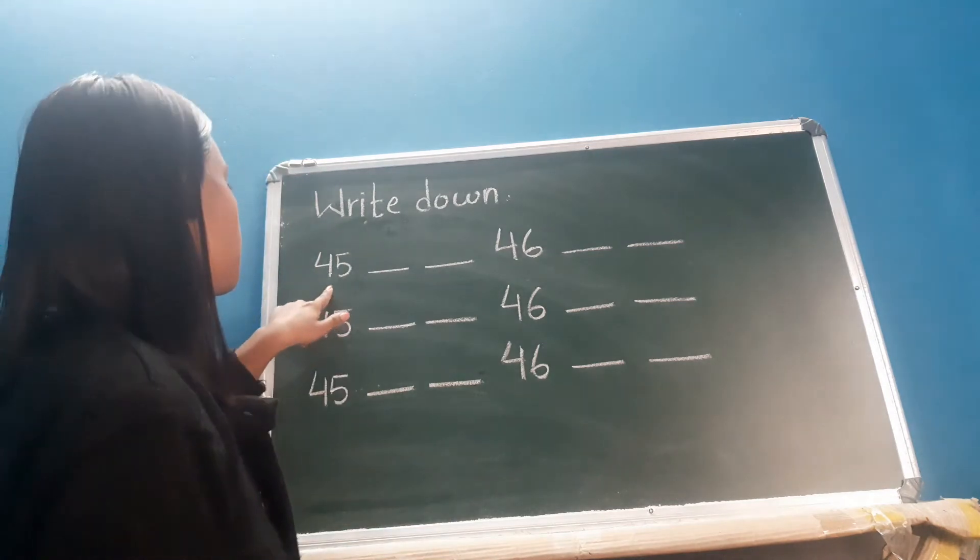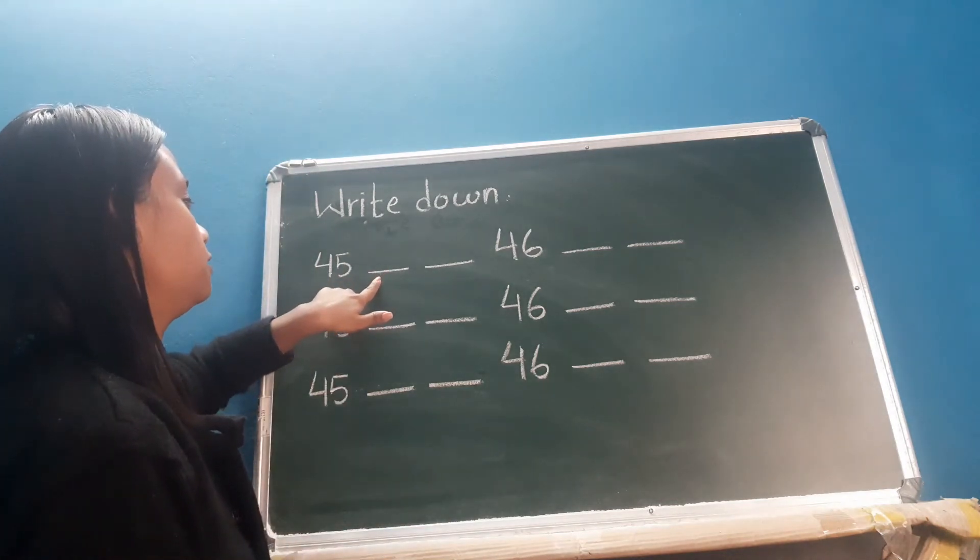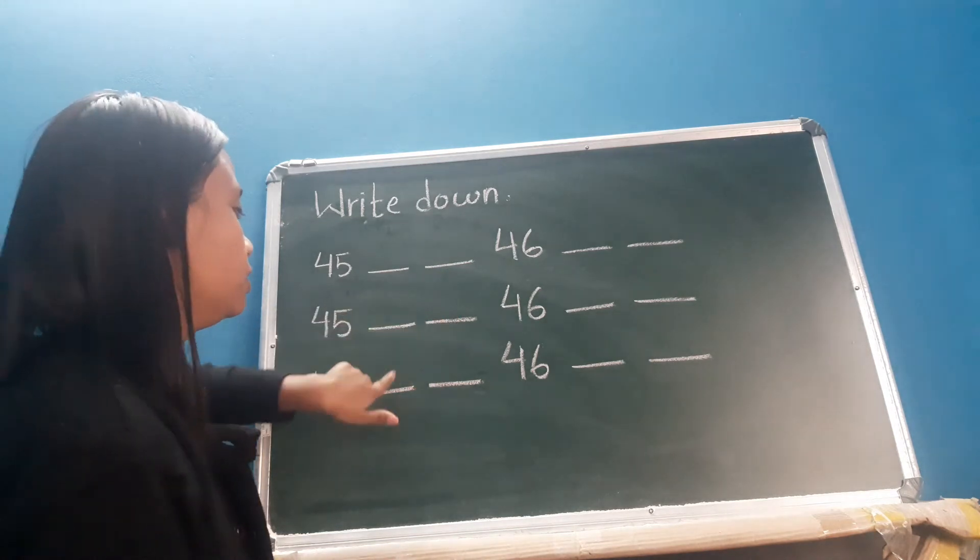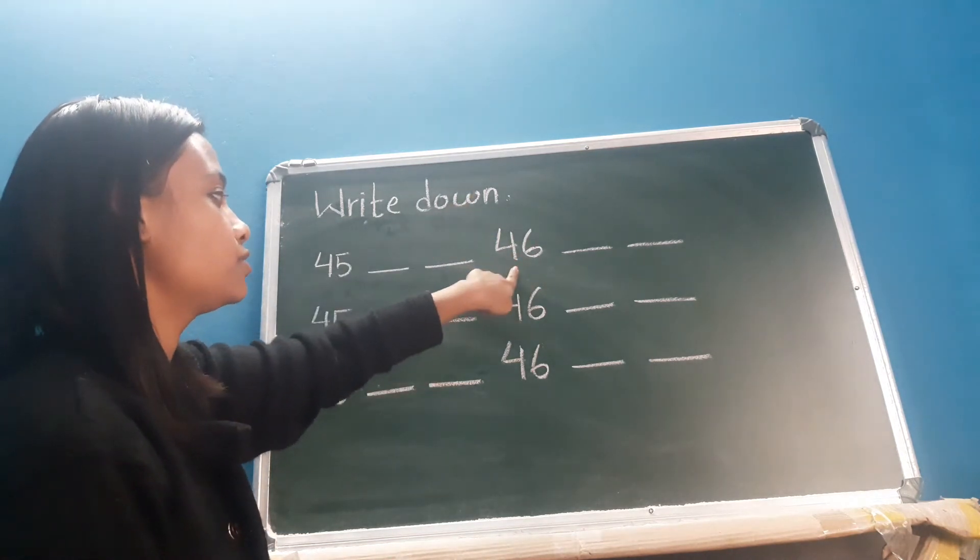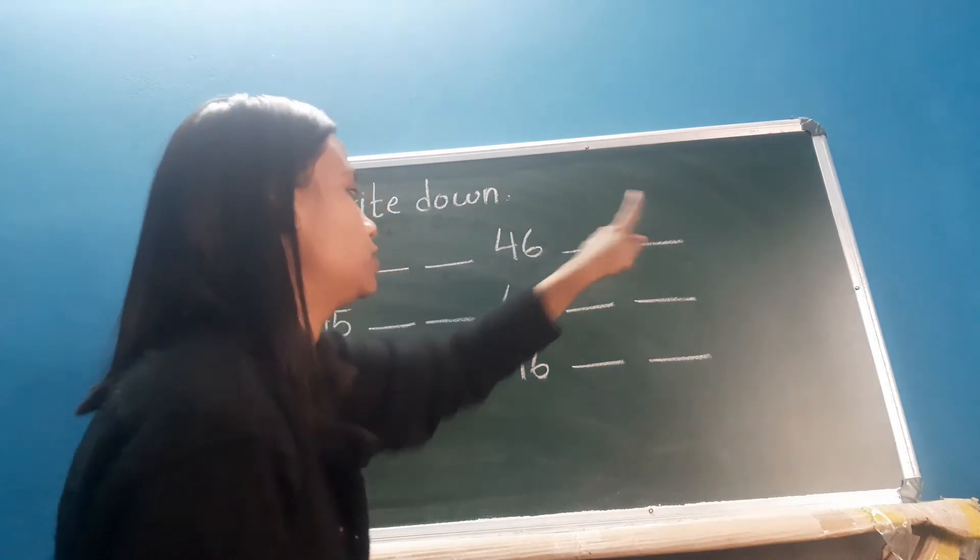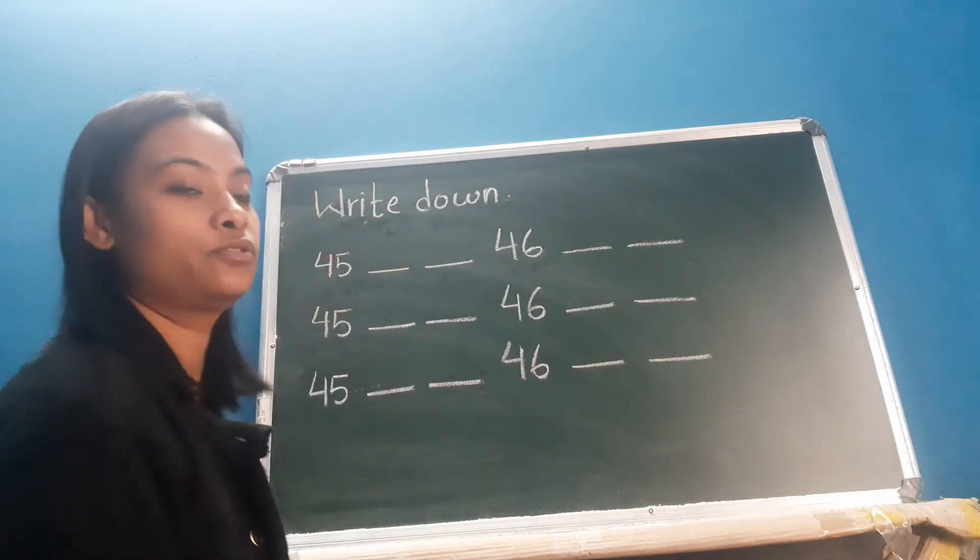So as you can see here there is 45. You have to write here 45, 45. Same goes here and after that there is 46. So you have to write here 46, 46 and same goes here.